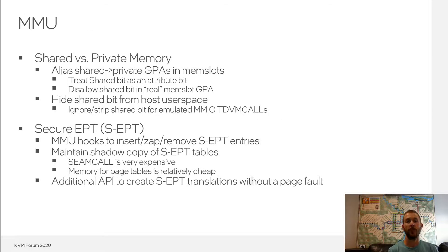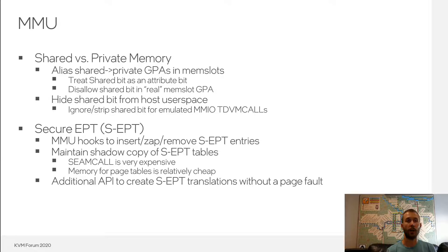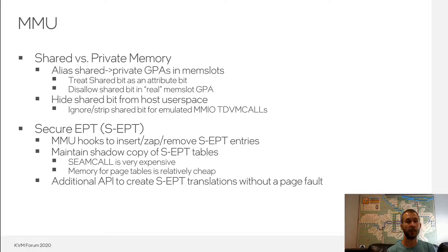In KVM's MMU, to handle shared and private memory, KVM aliases the shared GPAs to private GPAs in the memslots, effectively treating the shared bit as an attribute bit as opposed to a real physical address bit. By doing so, KVM can hide the shared bit from host user space — for example, when exiting to user space to handle emulated MMU, KVM strips the shared bit so that host user space only ever sees the real or private GPAs. This means host user space doesn't have to be enlightened to understand the difference and doesn't have to manage separate memory pools for private versus shared memory.